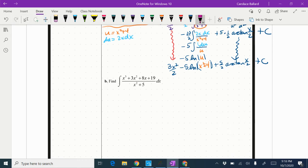So I'm going to set up my long division first. So I have on the inside, I've got x cubed plus 3x squared plus 8x plus 19.